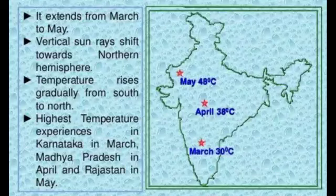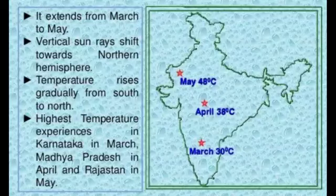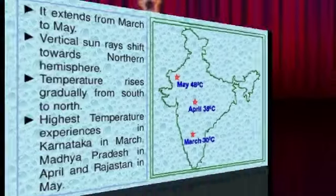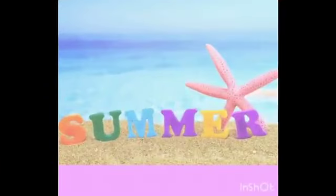Vertical sun rays shift northward, with the highest temperatures experienced in Karnataka in March, Madhya Pradesh in April, and Rajasthan in May. Key temperature values to remember: March — 38 degrees Celsius, April — 42 degrees Celsius, May — 45 degrees Celsius. The summer season extends from March to May.